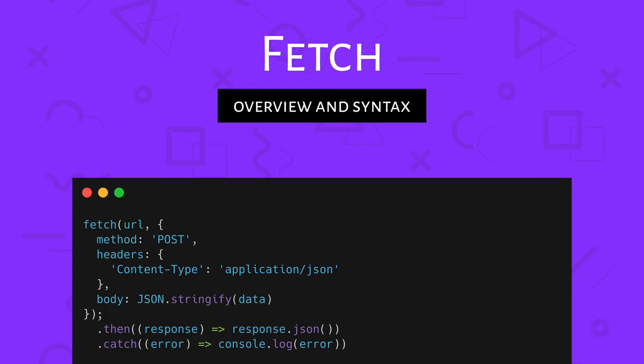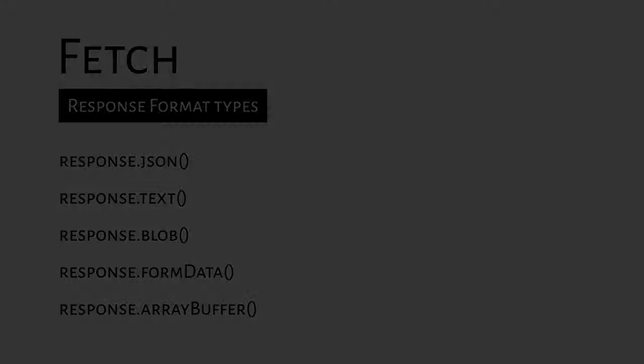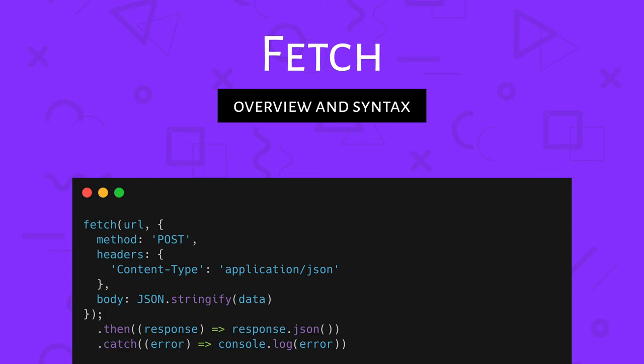The promise returns the response object, and because of that we need to use another method to get the body of the response. There are a few different methods depending on the format of the body we need. The most popular one is response.json, which converts the response to JSON. We also have text, formData, blob, and arrayBuffer. Right now you can see a more advanced code example with a POST request, with an options object that defines the method, headers, and body — which needs to be stringified.